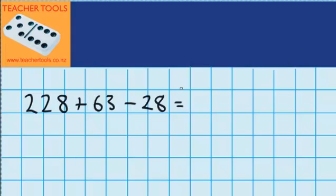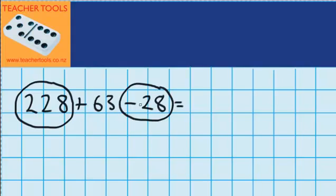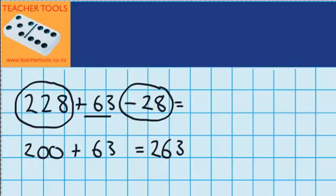So just like in the other questions let's look at these numbers and see if we can put any of these numbers together. Well I can see that this 228 and this subtract 28 could go together. 228 minus 28 would leave me with 200. And then all I'd have to do is add this 63. 200 plus 63 is 263. So the answer to this question is 263.